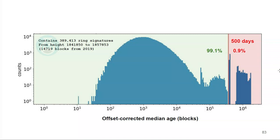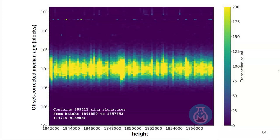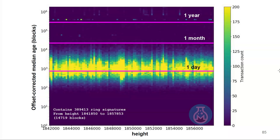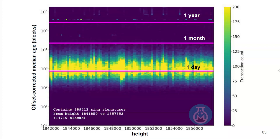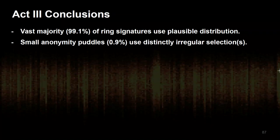On a log-log scale — median age and counts both in log scale — this big bump is transactions generated using the correct algorithm. On a heat map, the x-axis is block height equivalent to time, and the y-axis is the offset-corrected median metric. The bottom rows are one day, one month, one year. The big yellow band in the middle is the main anonymity pool — you want your transactions in that pool. Anything with a strange decoy selection past a month, past a year, is definitely not using the standard algorithm. Ones out at 500 days old are very peculiar and open up other heuristics.